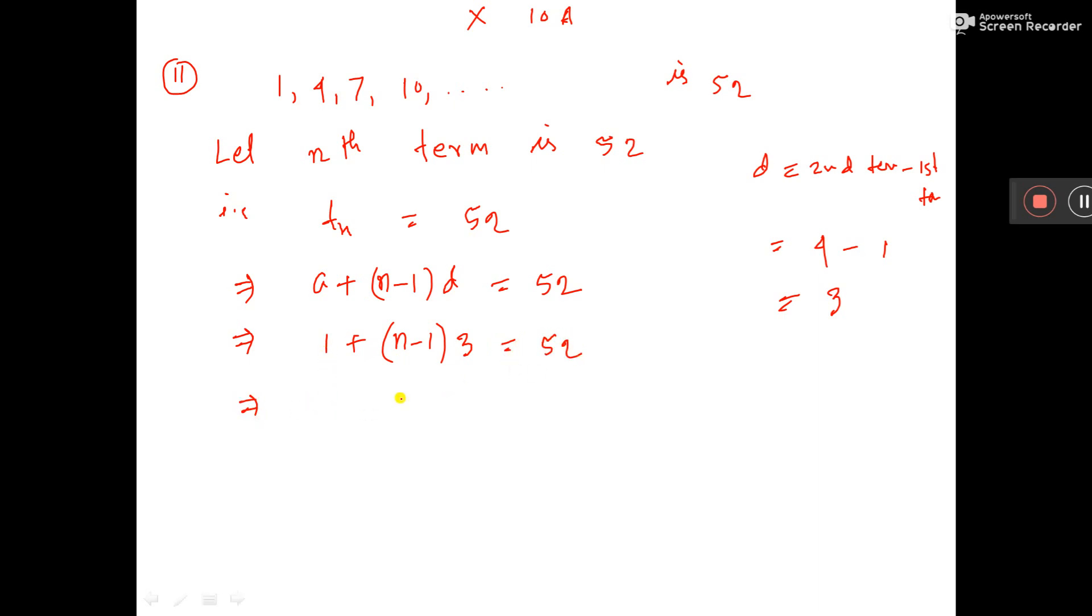So 1 on the right side. That is (n minus 1) into 3 is equal to 52 minus 1, that is equal to 51. So (n minus 1) is equal to 51 by 3, so 3 into 17 there.